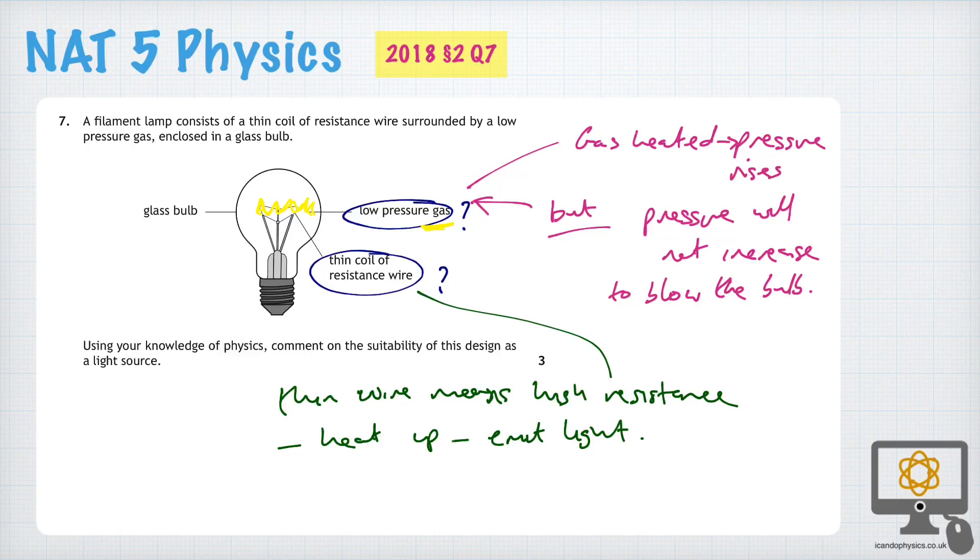And so it is suitable as a light source because of the fact that it's got a high resistance and therefore it will glow red-hot as the electrons try to travel through it and keep bouncing into the wire itself.